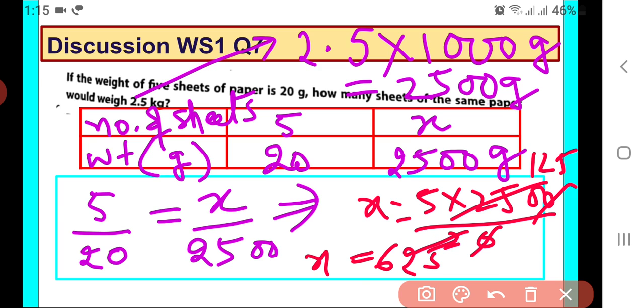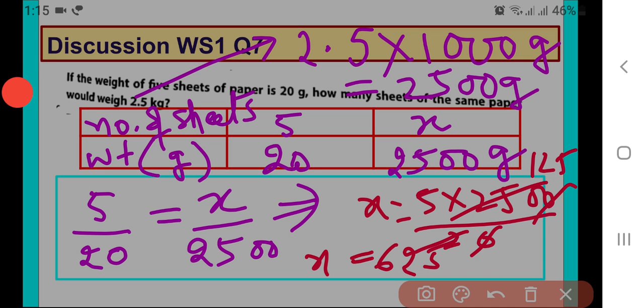So 625 sheets will weigh 2.5 kilograms. You are going to write this statement in the answer. Right? So I hope it is clear to you.